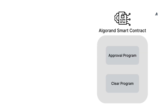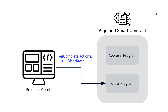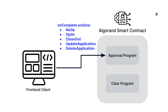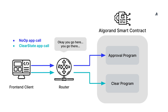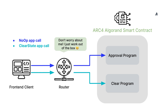But what is a router? Algorand smart contracts consist of two programs: approval program and clear program. The clear program is called when the app call is sent using a clear state on-complete action, while the approval program is called when the app call is sent using all other on-complete actions. So the router routes application calls to their relevant programs and contract methods for you. On a non-ARC4 smart contract, you would have to manually define the router. But by extending the ARC4 contract class, the Algorand Python compiler automatically generates one for you, so you don't have to manually define one.